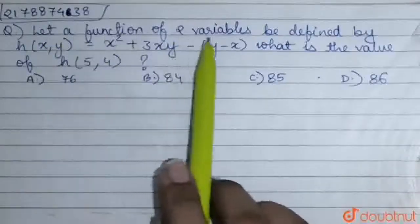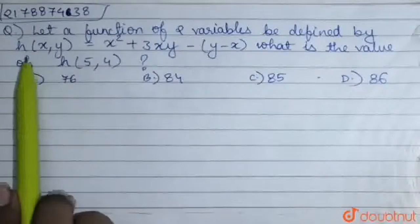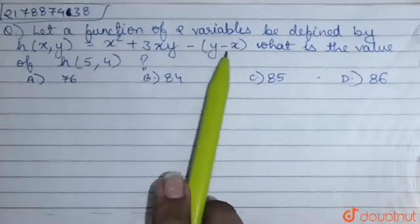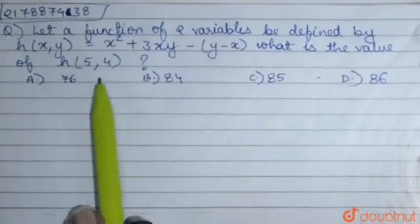Question is, let a function of two variables be defined by h of x, y equal to x square plus 3xy minus of y minus x. What is the value of h of 5, 4?